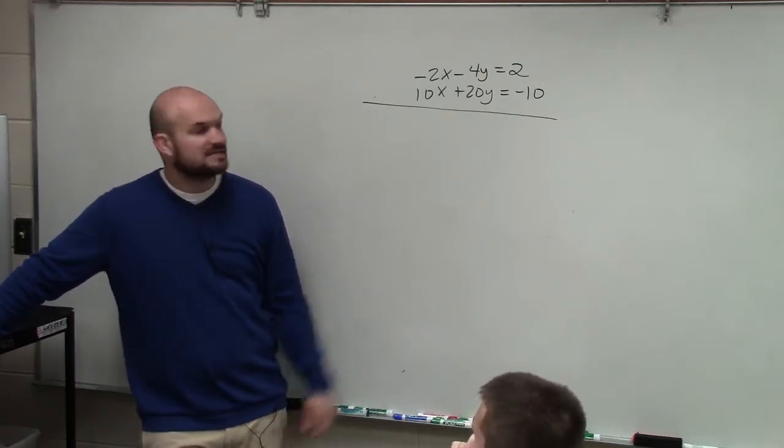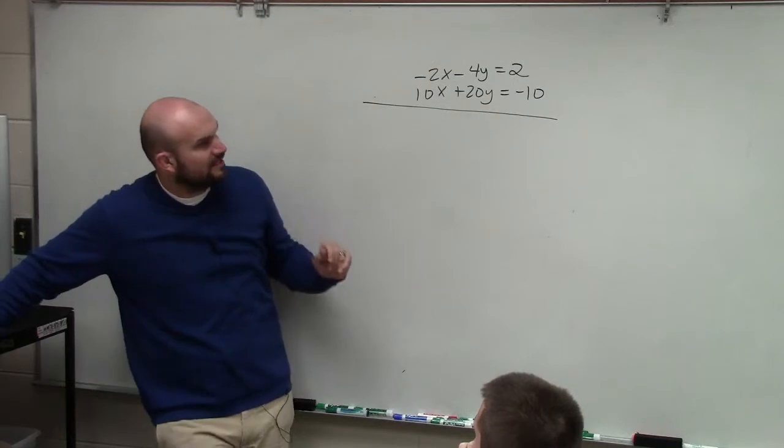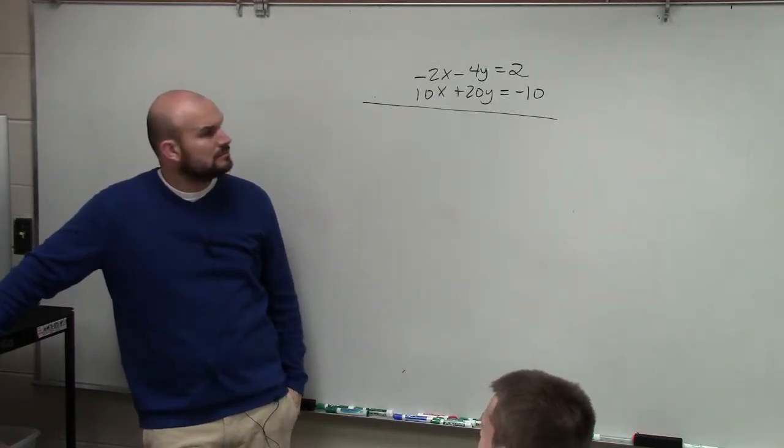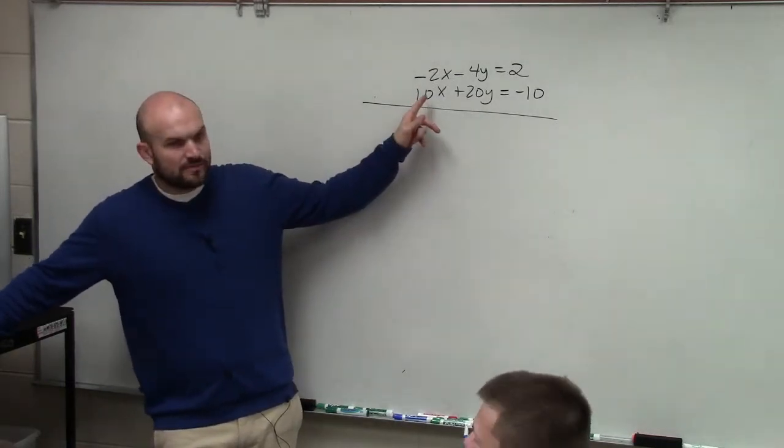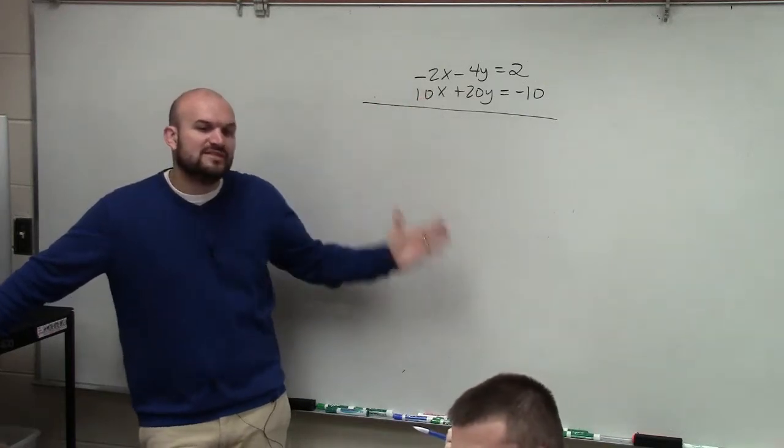So what is the smallest number that -2 and 10 both divide into? 2? 10 doesn't divide into 2. What is the smallest number they both divide into?